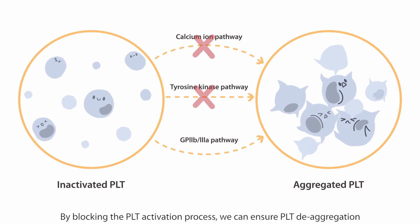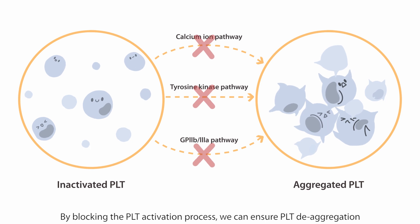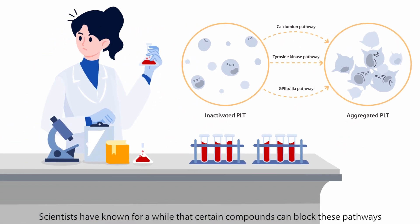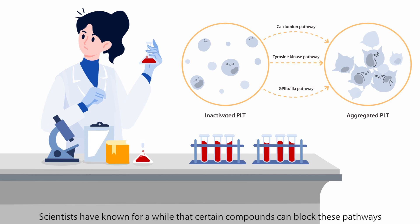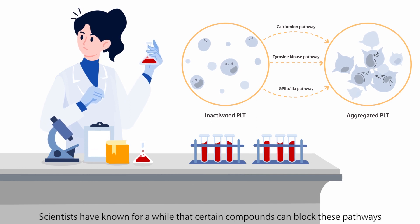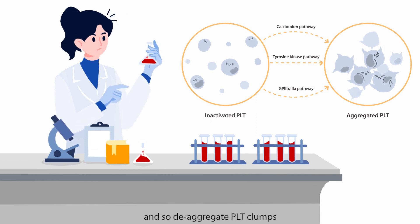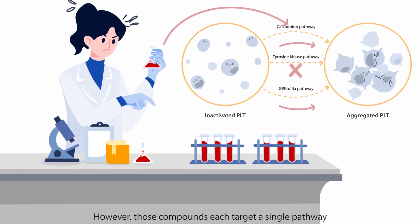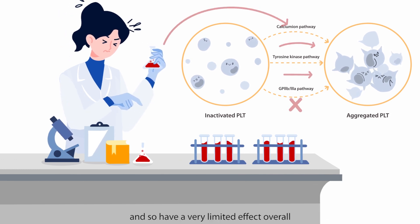By blocking the PLT activation process, we can ensure PLT de-aggregation. Scientists have known for a while that certain compounds can block these pathways and so de-aggregate PLT clumps. However, those compounds each target a single pathway, and so have a very limited effect overall.